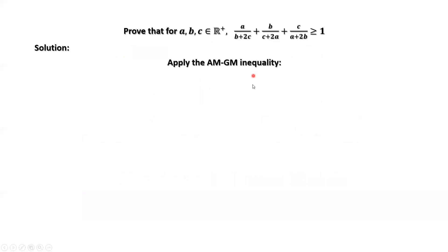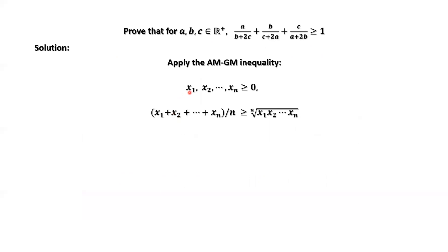Apply this famous inequality. If X1, X2, ... Xn are greater than or equal to 0, then we have the arithmetic mean is greater than or equal to the geometric mean. This inequality is called the Arithmetic and Geometric Mean inequality.